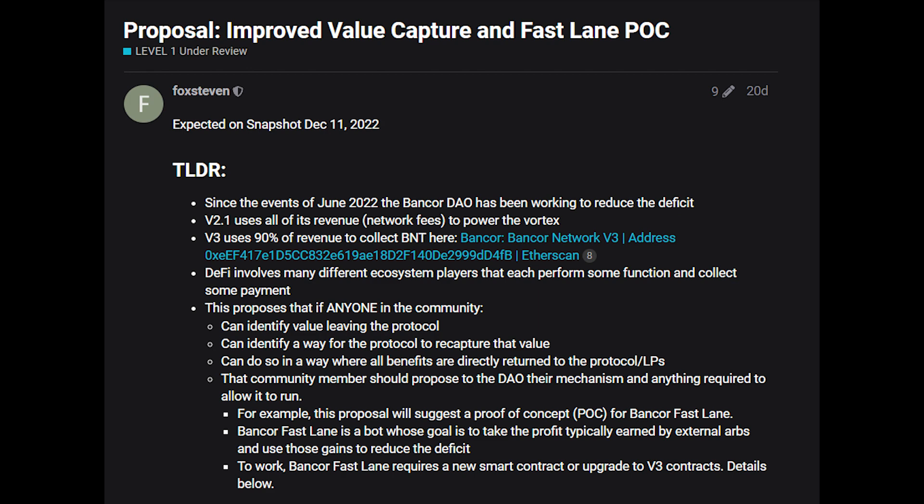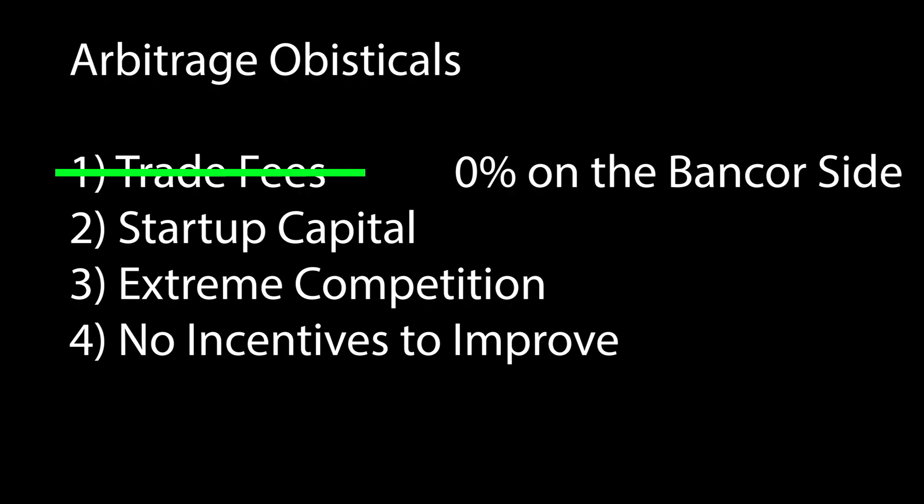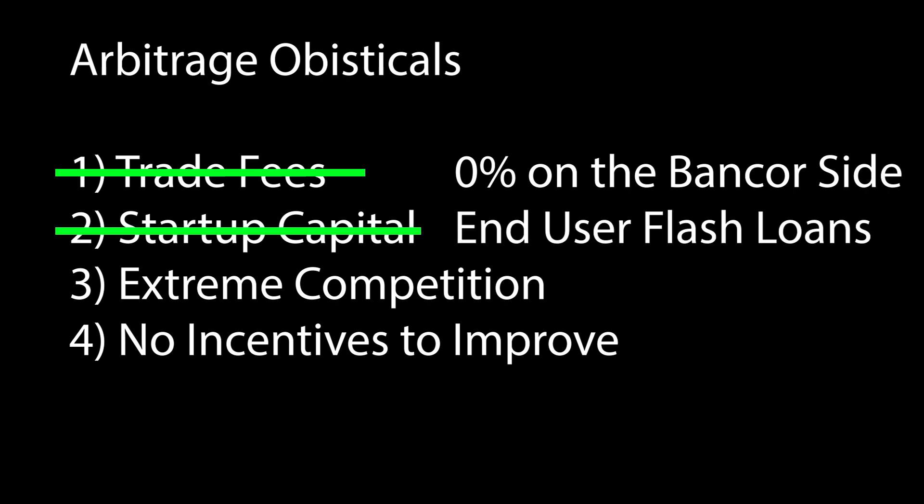But the Bancor Fastlane ARB smart contract is different. First off, there's no trade fee on the Bancor side of the ARB, so the gap between the prices can be smaller and it would still make money. Second, flash loans would be input by users who would find the best rates — we don't have to spend time creating a program or a bot to look for the best flash loans; users will do that for us. Third, the Bancor Fastlane wouldn't have to compete with other ARB bots, because it will be able to find profitable ARBs before other bots can, since it doesn't have to pay trade fees to Bancor.